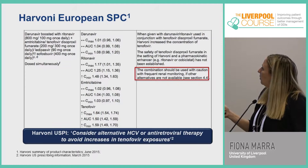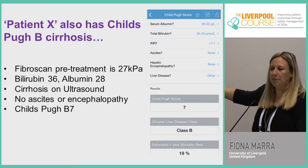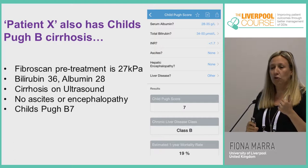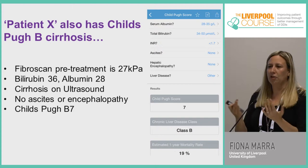Using one of the simple apps, this patient has Child's-Pugh B cirrhosis — moderate liver impairment. That's really important when thinking about both treatment of the HIV, treatment of the Hepatitis C, and all the other drugs the patient is on.